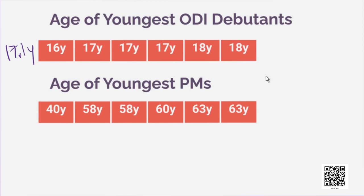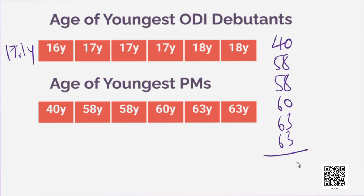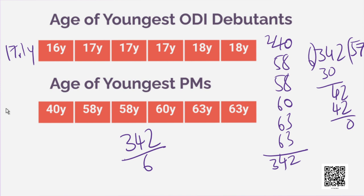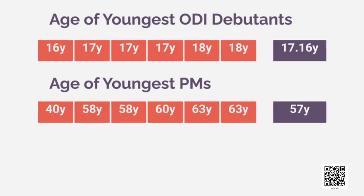Now, we will calculate the average of the youngest Prime Ministers. Adding their ages, the total comes to 342. And the average will be 342 divided by 6. So, the average is 57 years. Children, look at the variation in the career of a cricketer and the career of a Prime Minister. See the number of years of difference — it is 40 years.